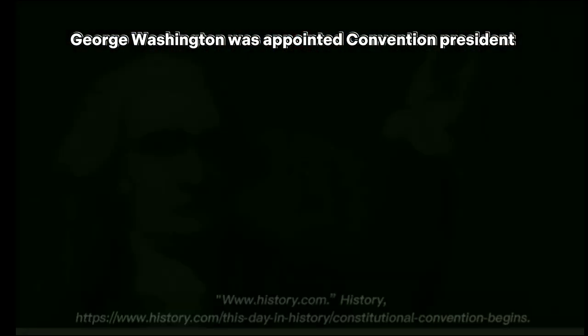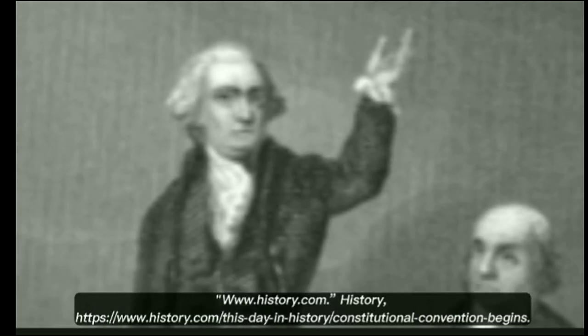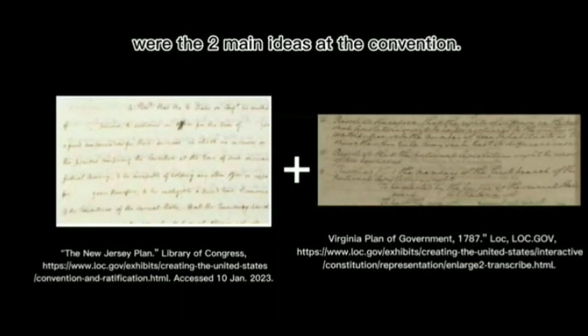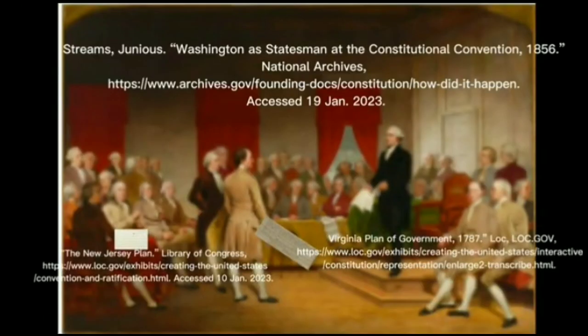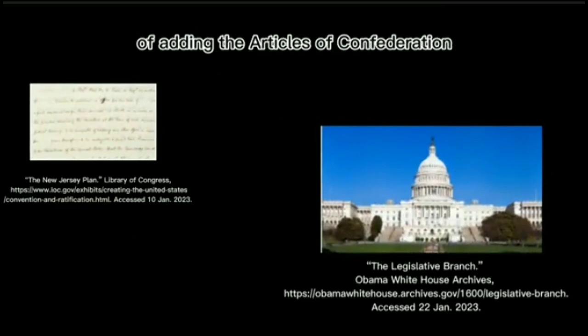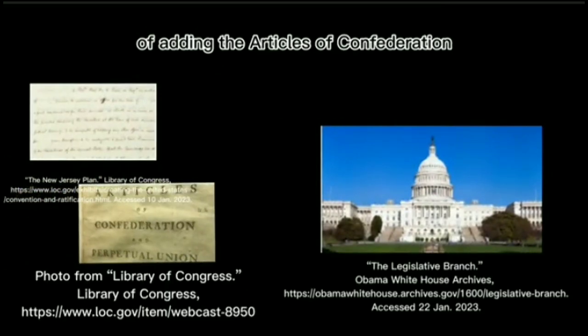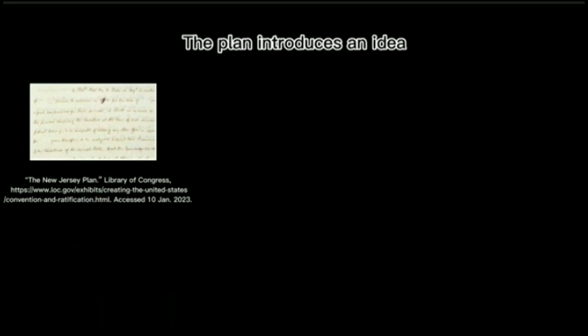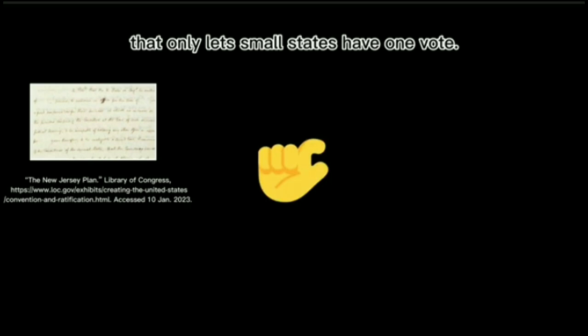George Washington was appointed Convention President. The delegates of the Constitutional Convention rejected the Articles of Confederation and created the first written Constitution. There were multiple ideas brought up at the Convention. The Virginia Plan, read by James Madison, and the New Jersey Plan, read by William Paterson, were the two main ideas at the Convention. The New Jersey Plan brought the idea of amending the Articles of Confederation and added powers to raise revenue. The plan introduced an idea that only lets small states have one vote.